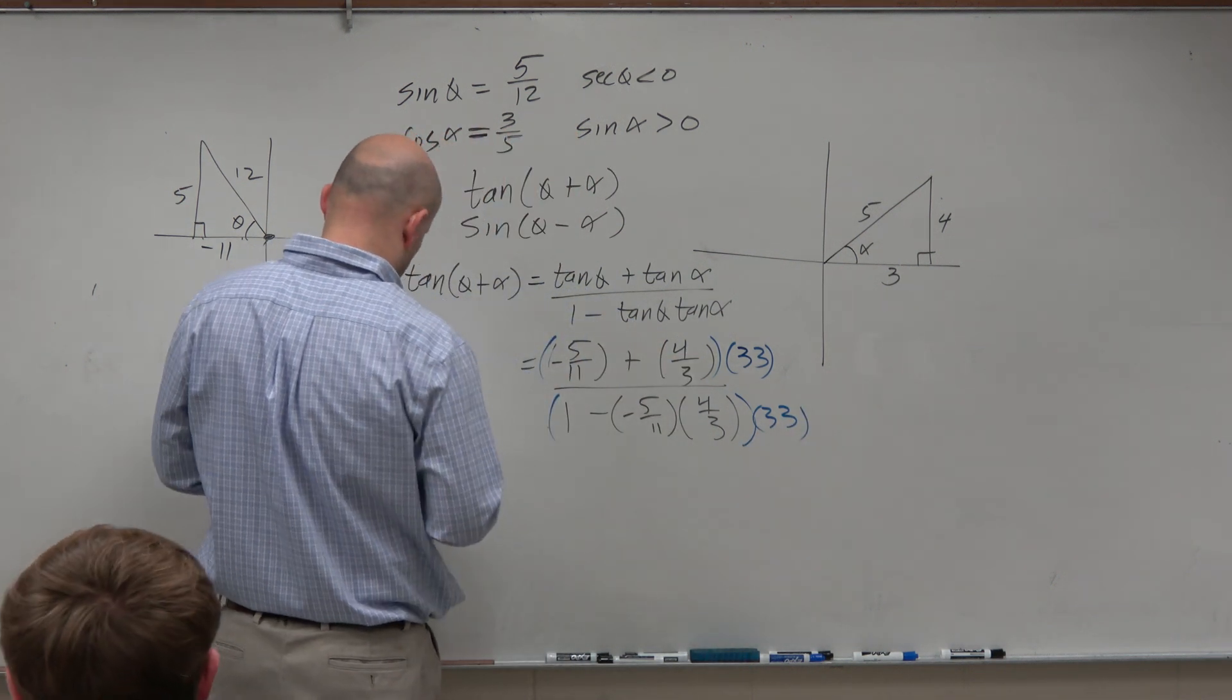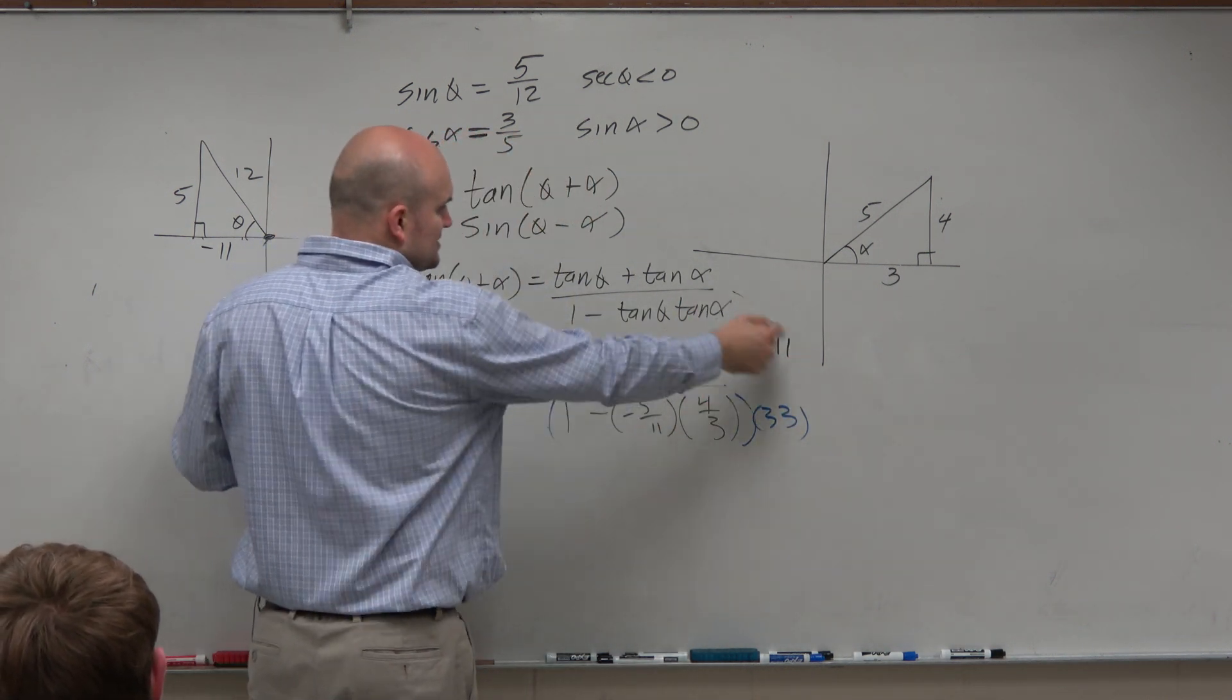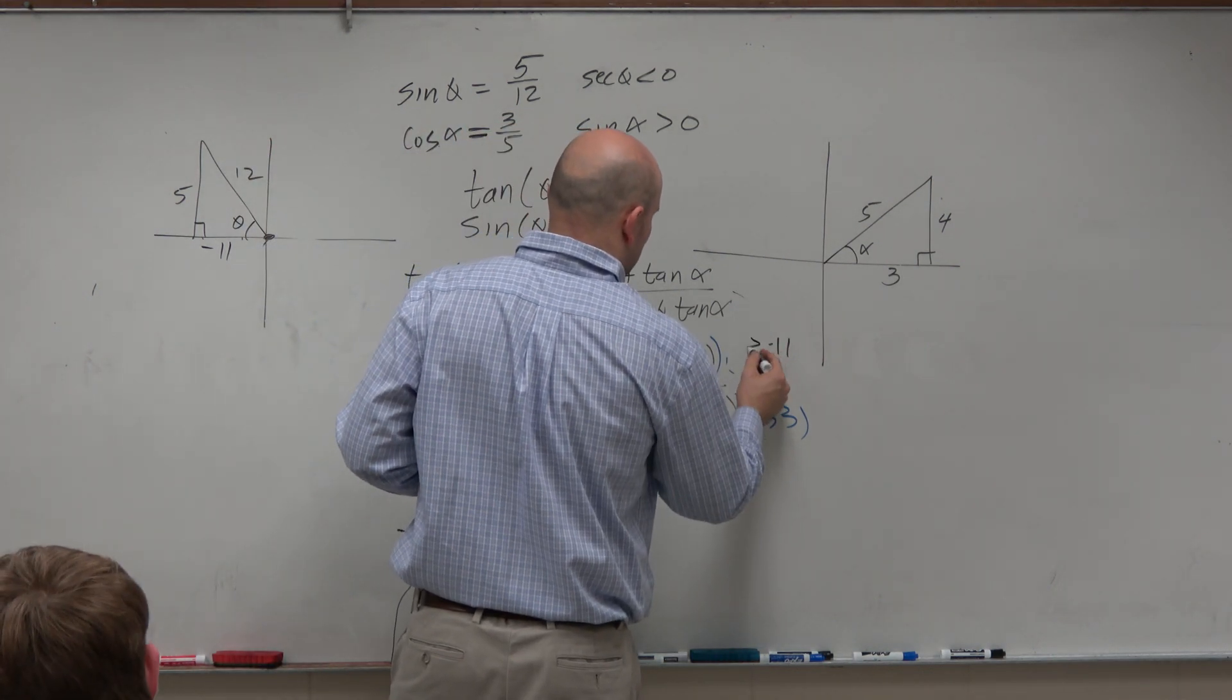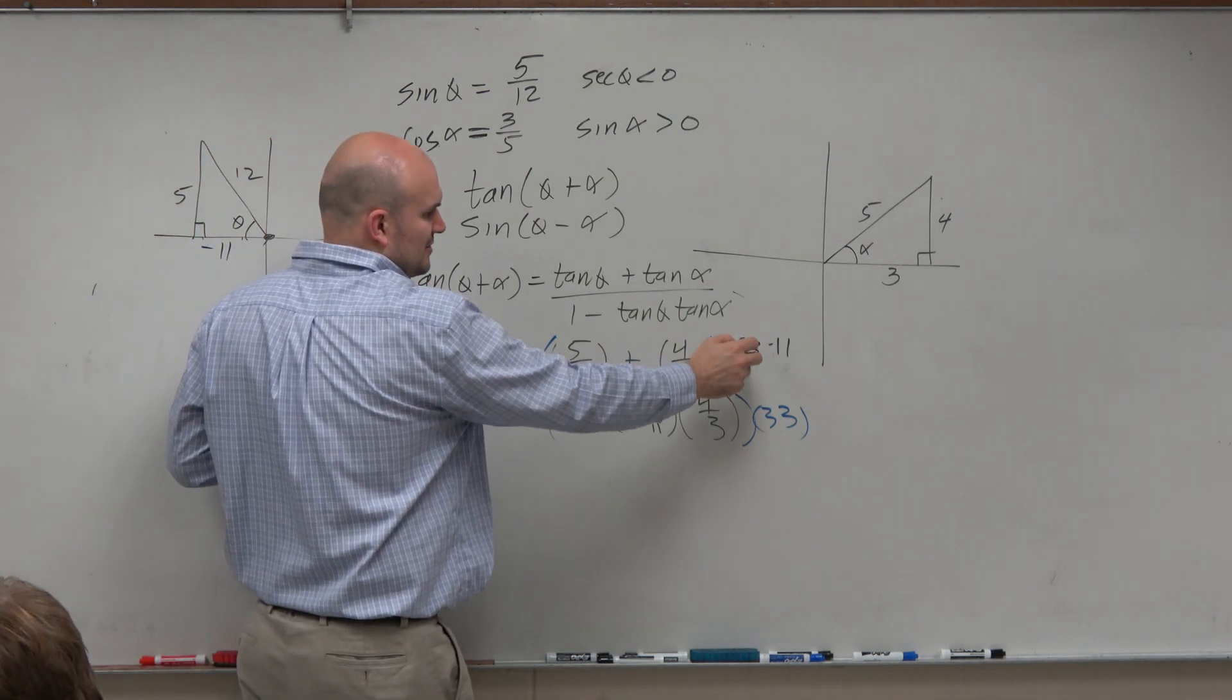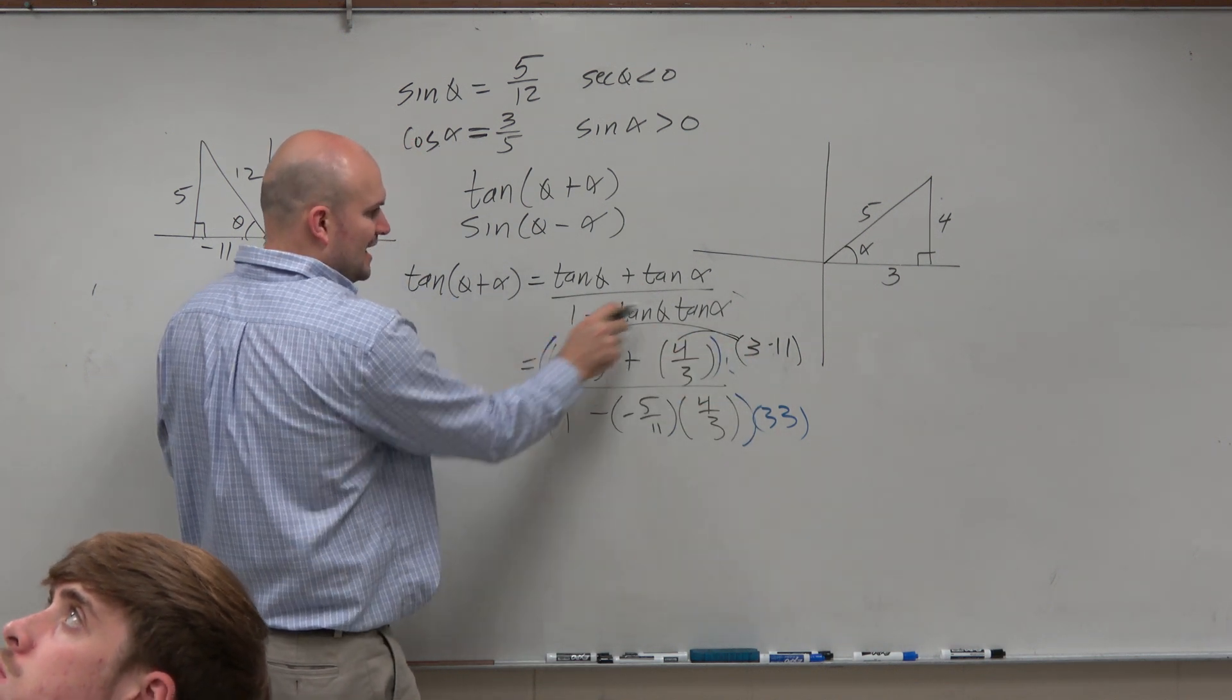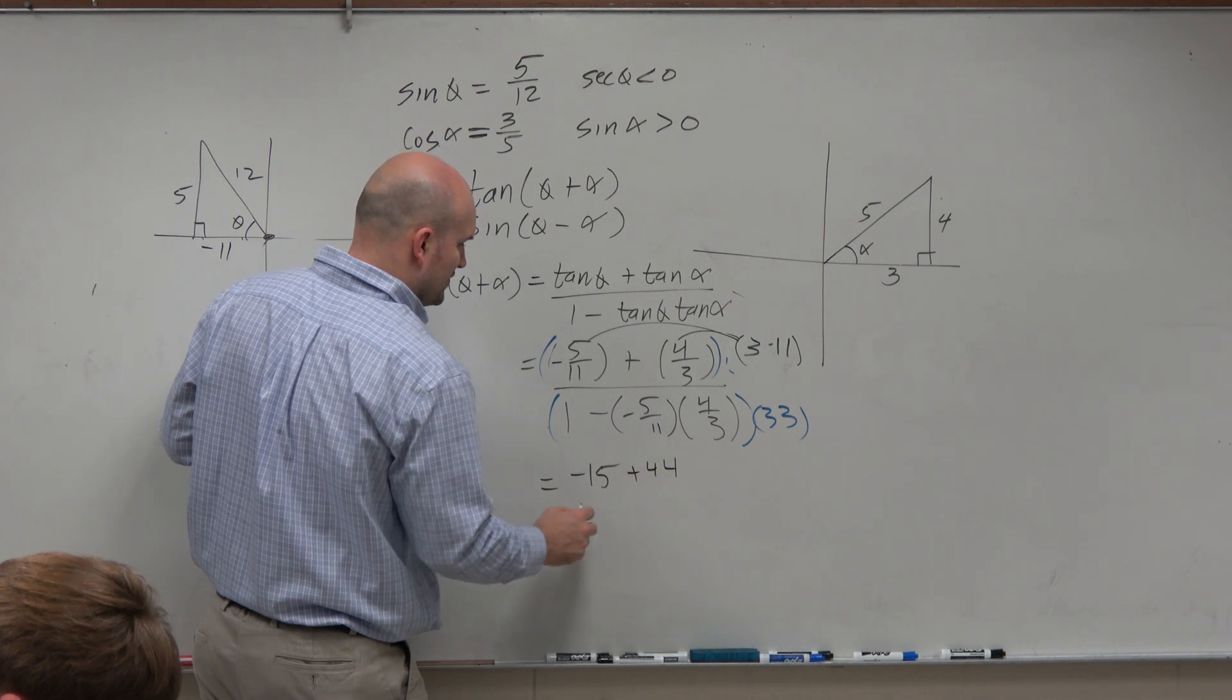Applying distributive property, you know, some of you might like it like this instead, 33 times 11. So therefore, you can see the 11s divide out. So you're left with a, oh, 11 times 33. Sorry about that. 11 times 3, right? OK. So sometimes it's easier to break it up. And this just says a 3 times 11 instead of writing it as 33. Because here you can see the 11s, when you distribute this, the 11s divide out. So you're left with a negative 5 times 3, which is a negative 15. Here the 3s divide out. So you're left with a 4 times 11, which is a positive 44.